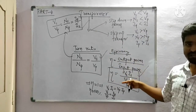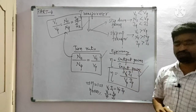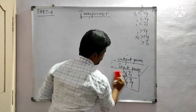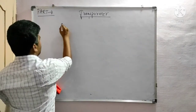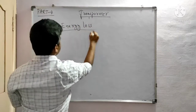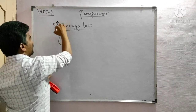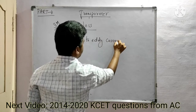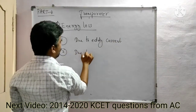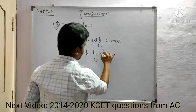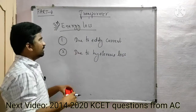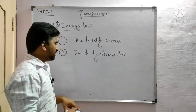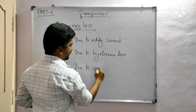The efficiency formulas are very important. What are the causes for energy losses in a transformer? There are many factors that frequently appear in examinations. The first cause is due to eddy current loss. The second cause is due to hysteresis loss. The third cause is due to copper loss.